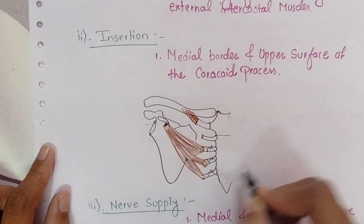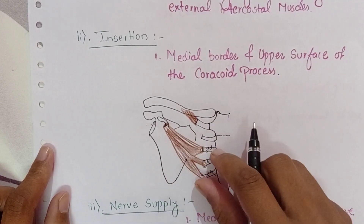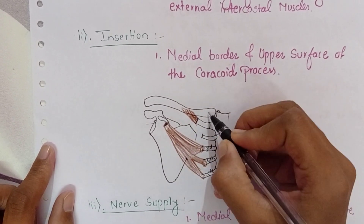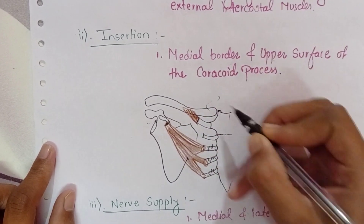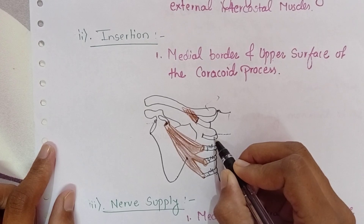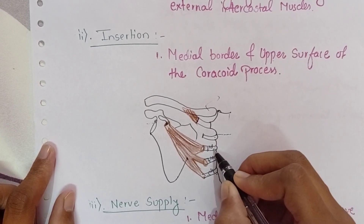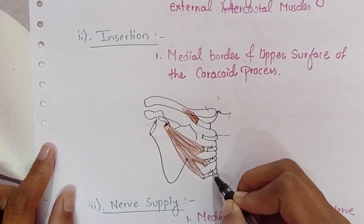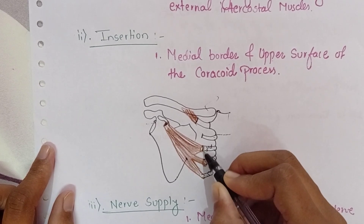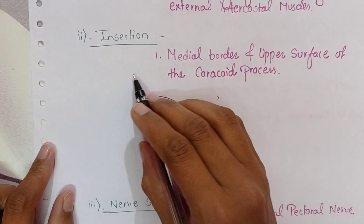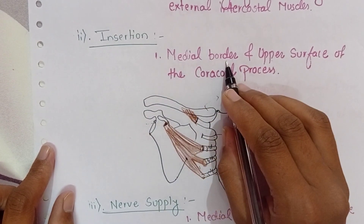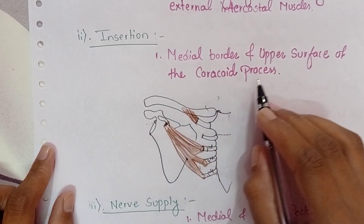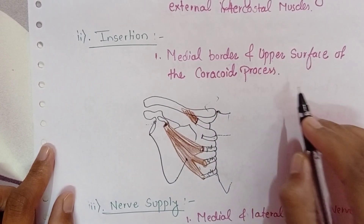In this diagram we can see the origin of this muscle. Here it is the clavicle; here the second rib is there, then third, fourth, and fifth. From the third, fourth, and fifth ribs near the costochondral junction, the insertion will be the medial border and the upper surface of the coracoid process of the scapula.